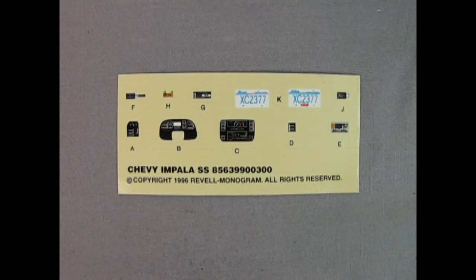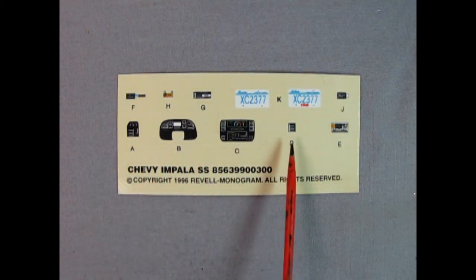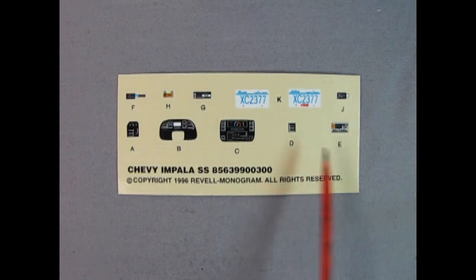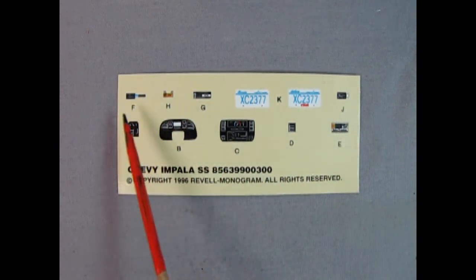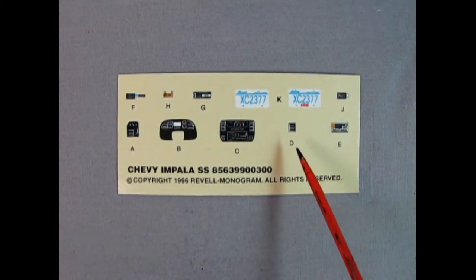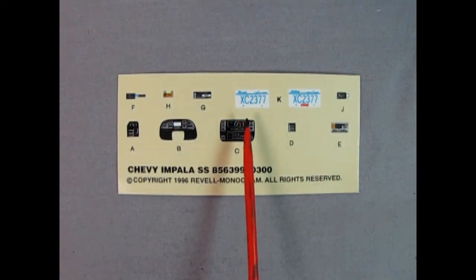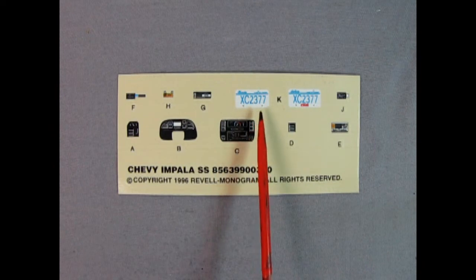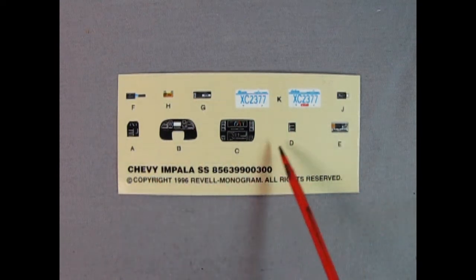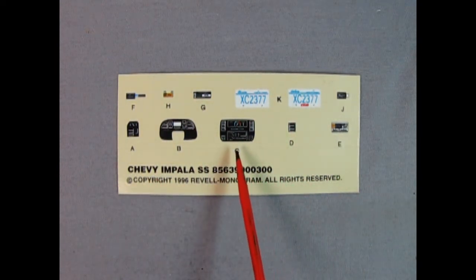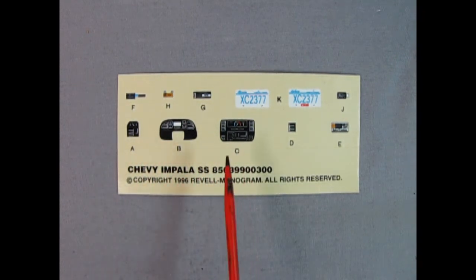And here we have our decal sheet and these three nice ones make up the dashboard as well as D. That looks like a vent actually. And then these are all underneath the hood. So again, really cool. Maybe D's under the hood too. And then you get your Illinois XC2377 license plates. And this one has a registration sticker. So again, really nice detail in here. And look at how good that gauge is right in there. That's on our radio. Again, really, really awesome stuff.